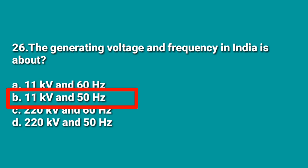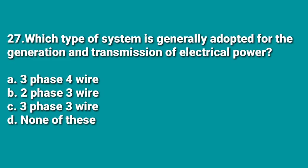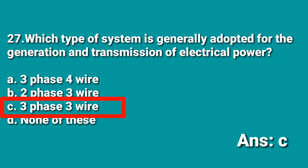The next question: which type of system is generally adapted for the generation and transmission of electric power? Generation and transmission of electric power is carried out on a 3-phase 3-wire system, while on the distribution side a 3-phase 4-wire system is preferred. The neutral comes from the transformer in a delta-star configuration. Hence C (3-phase 3-wire) is the correct answer for generation and transmission.